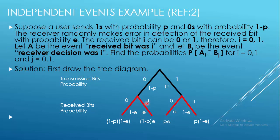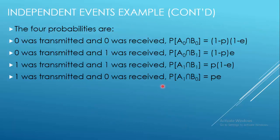The resulting joint probabilities are: 0 was transmitted and 0 received is (1-P)(1-E); 0 was transmitted and 1 received is P(A_0 intersection B_1) equals (1-P)E; 1 was transmitted and 1 received is P(1-E); and 1 was transmitted but 0 received is P(A_1 intersection B_0) equals PE.